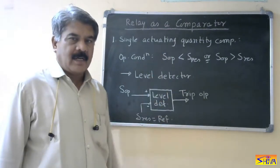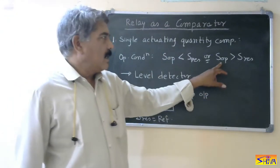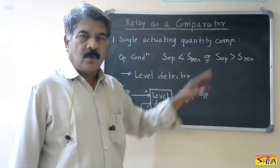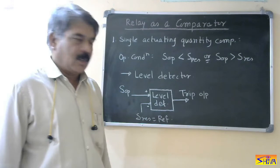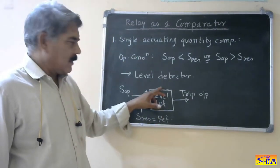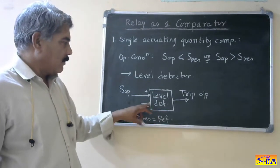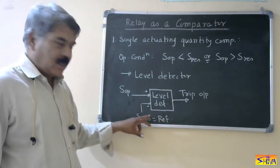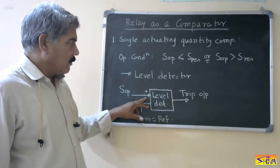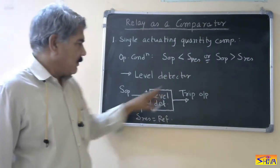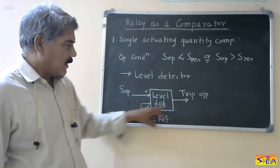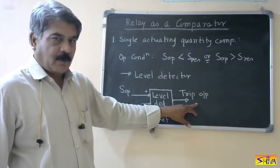It is an example of an undervoltage relay. If the operating quantity is more than the restoring quantity, this gives the example of an overcurrent or overvoltage relay. So this is nothing but a level detector. The block diagram may be like this — here we have a reference quantity, that is the restoring quantity, and the operating quantity. To satisfy the operating condition, when S-operating is more than S-restricting, we get the trip output.